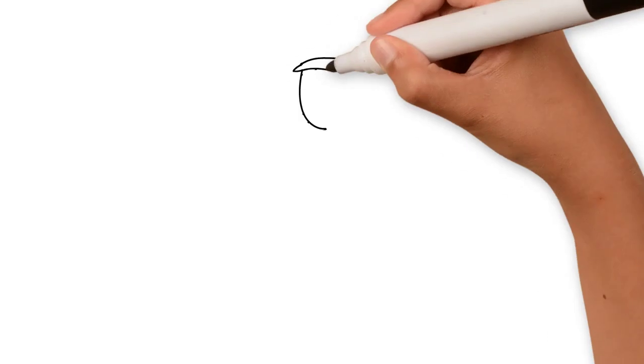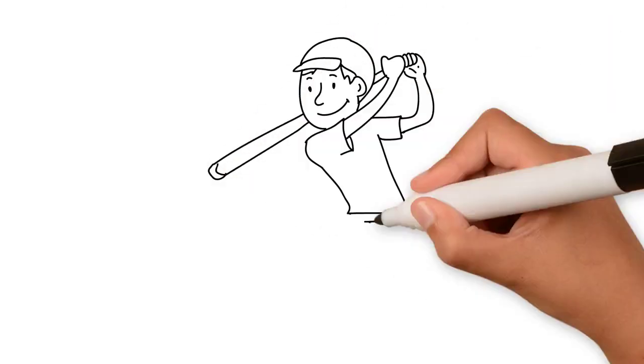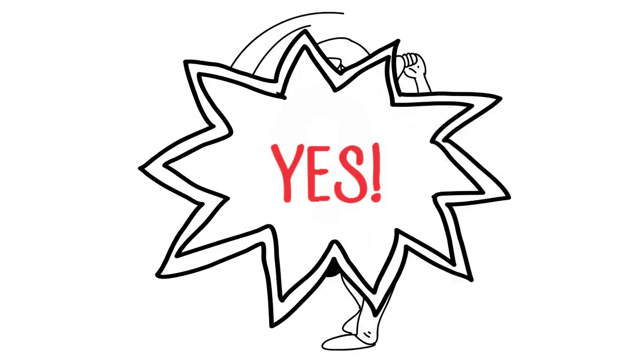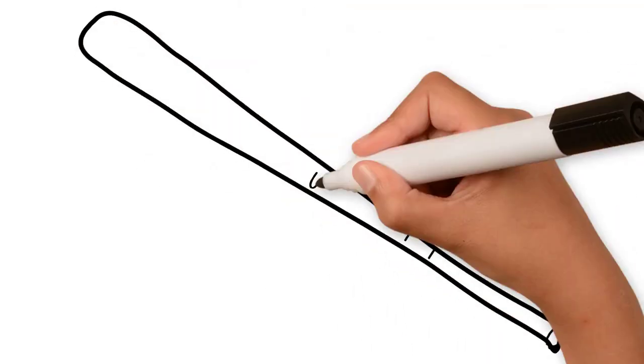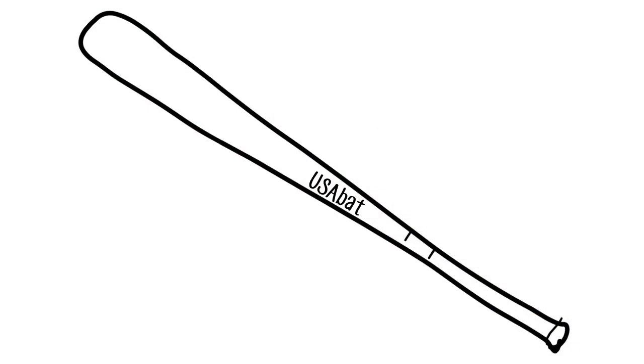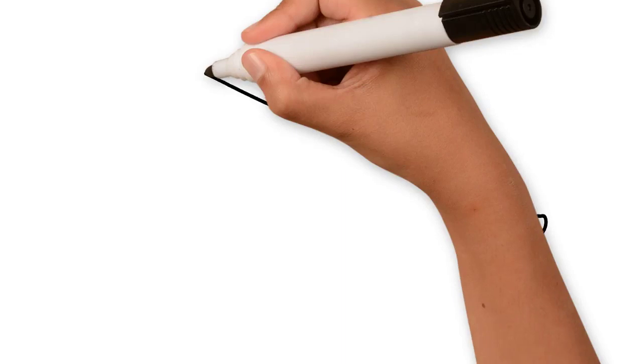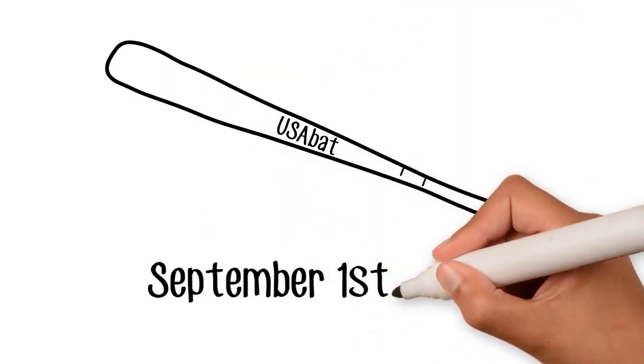What if Timmy wants to play ball with Billy in a USSSA game? Can he use his USA bat? Yes. USA bats are legal for play in USSSA leagues. When can Timmy buy a USA bat? Expect the new USA bats for sale September 1, 2017.